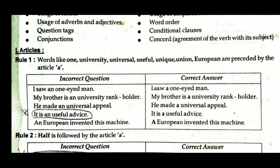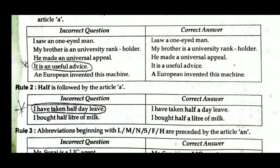Rule 2: The word 'half' should be followed by the article 'A'. For example, 'I have taken half day leave' is incorrect; the correct answer is 'I have taken half a day leave.' Similarly, 'I bought half liter of milk' is incorrect; correct is 'I bought half a liter of milk.'